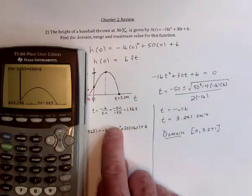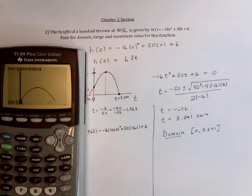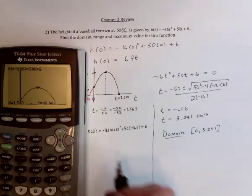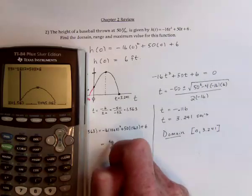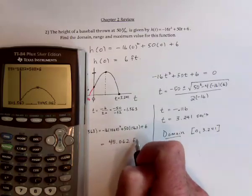The next part I wanted to do is find out what's the maximum height. So substitute this into the function. So trace 1.563. It should put the cursor right here at the top. Yes. And so it's 45.062 feet.